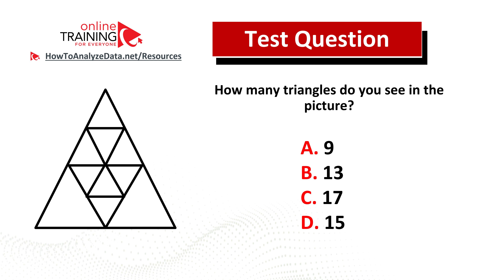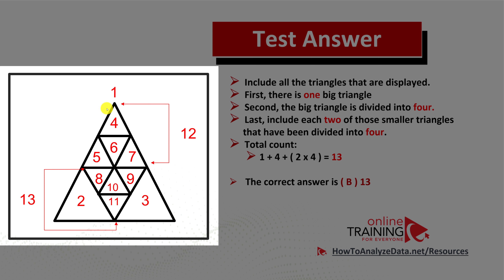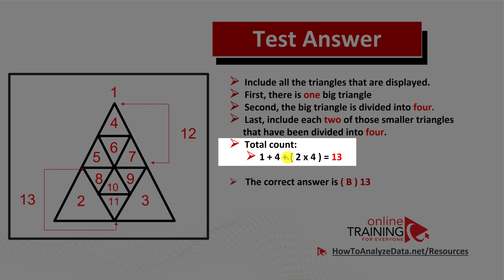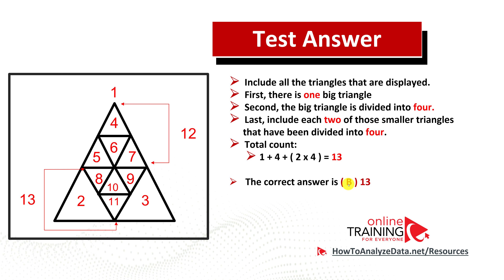Let me walk you through the process of counting triangles. First, include the largest outside triangle. Second, include the smaller triangles formed when the large triangle was divided into four. Then include each of the very small triangles — counting up to eleven. Finally, include the remaining smaller triangles not yet counted, bringing us to 12 and 13. The correct answer is 1 plus 4 plus 2 by 4, which equals 13 — choice B.